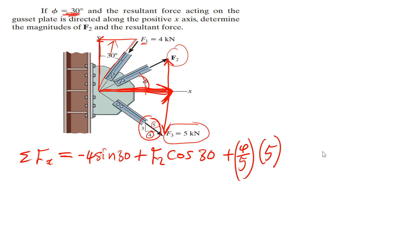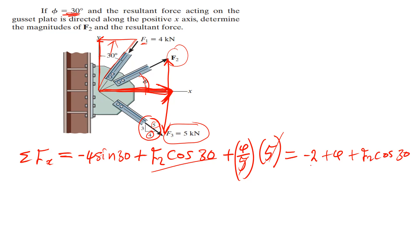Adding the x-components: sine 30 gives 0.5 times 4, giving negative 2. The 5s cancel in the F3 term, giving positive 4. So we have negative 2 plus 4 equals positive 2, meaning the summation of forces in x equals 2 plus F2·cos30.